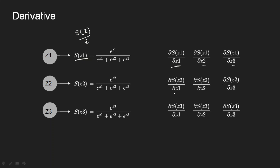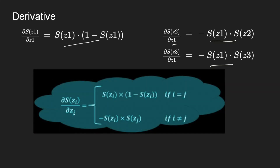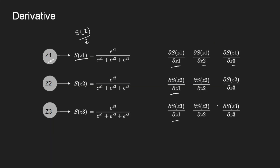Let us try to calculate these three terms. I am calculating the derivative of the Softmax with respect to Z1. If you observe the pattern: my input is Z and the Softmax of Z. If both refer to the same node, my equation becomes one form. If both are different — the Softmax is for one node but the dependency is on another node — then the equation takes a different form. Writing this in general form with numerator index i and denominator index j: if i equals j (same node), I get one equation; if i is not equal to j (different nodes), I get another equation. Using these two equations, we can calculate all nine derivative values of the Softmax function.